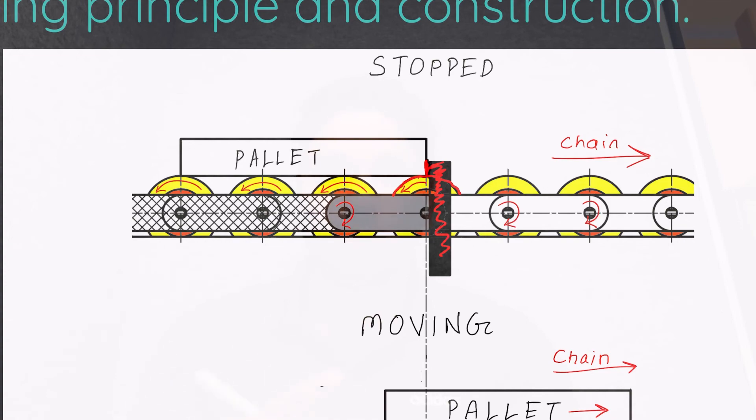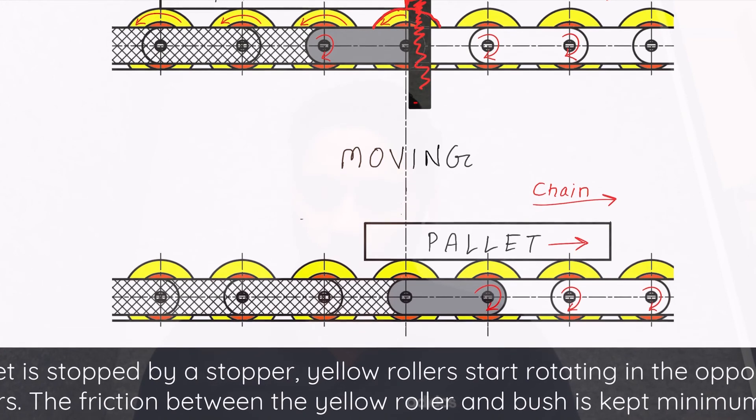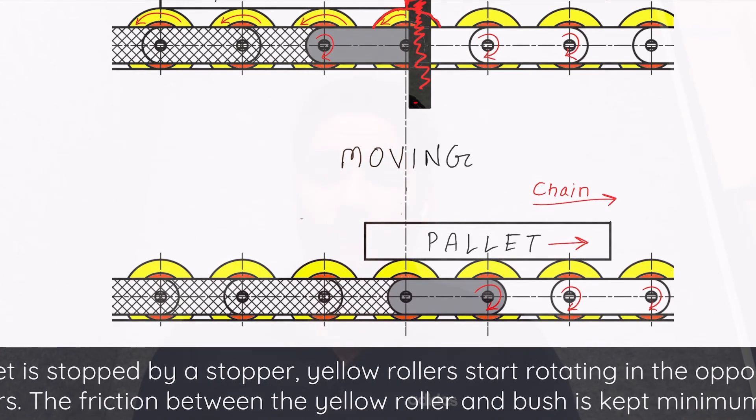As soon as we withdraw the stopper, the pallet is free to move in the forward direction. Now it will rest on the rollers and will keep on moving with the chain, and these rollers, the orange rollers, they will keep on rotating in the same direction as they were moving earlier.